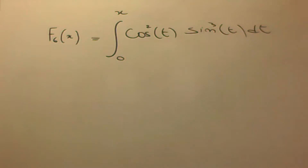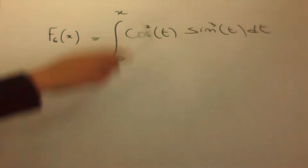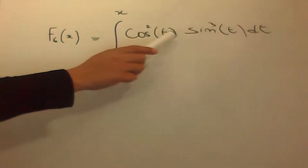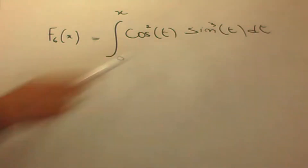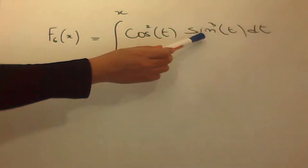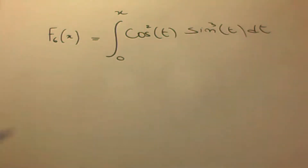Bonjour à tous, aujourd'hui on va calculer l'intégrale cosinus au carré de t fois sinus puissance 3 de t dt. C'est une intégrale qui contient deux fonctions : une fonction sinus et une fonction cosinus.